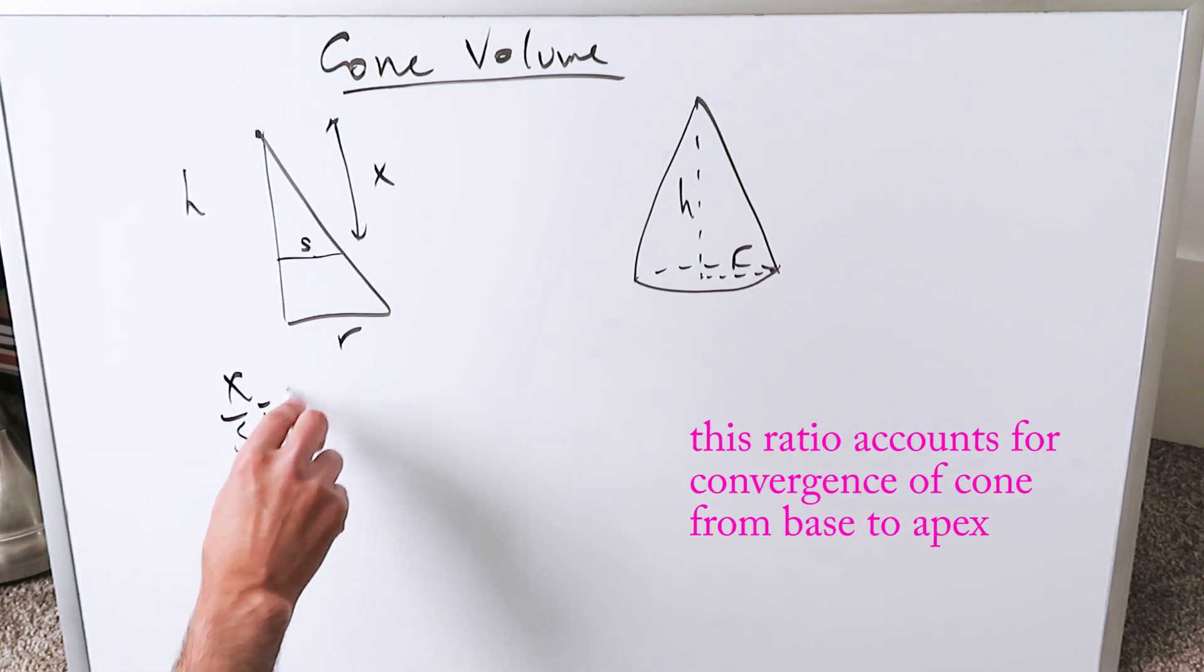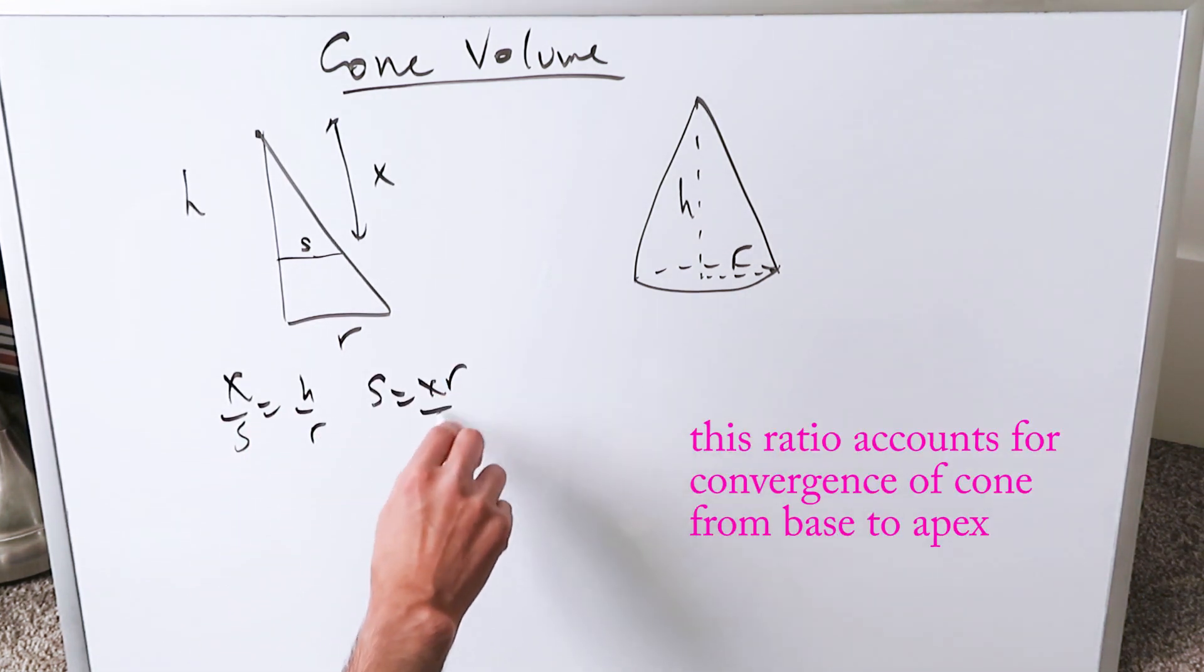Solve for S. x over S is equal to h over r. S is equal to xr over h.